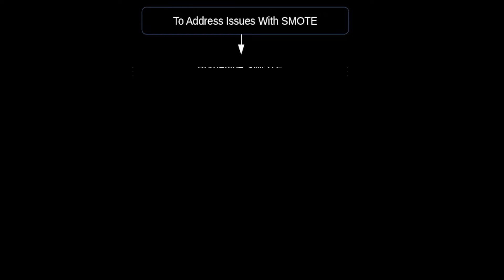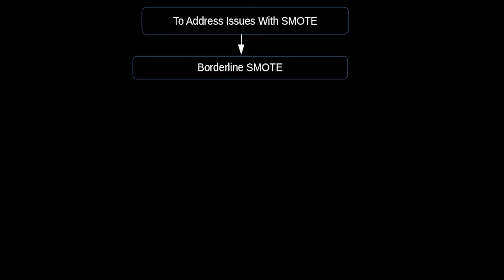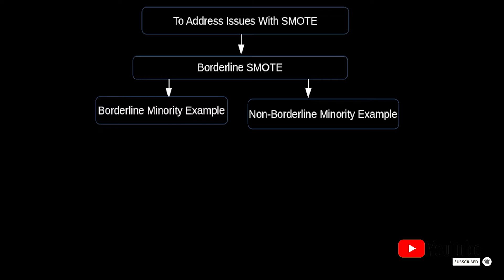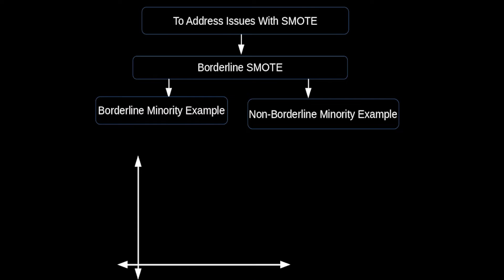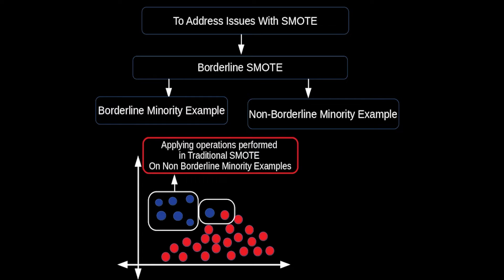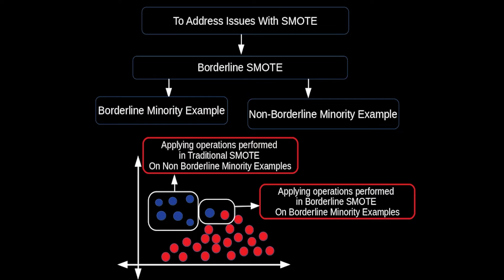To address these issues, we have an extension of SMOTE called Borderline SMOTE, which is divided into two parts. It works with borderline minority examples as well as non-borderline minority examples. Traditional SMOTE operations are applied to non-borderline minority examples, while Borderline SMOTE is applied to borderline minority examples.